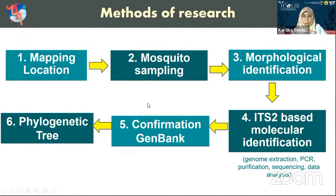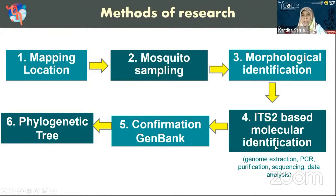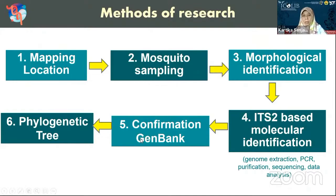There are several methods we used in our study. After mapping the location, we performed mosquito sampling by landing collection. Then we did morphological identification as the first measure to identify the vectors. This identification was further confirmed using ITS2-based molecular identification, which includes genome extraction, PCR, purification, sequencing, and data analysis. Once we obtained the ITS2 sequences, we performed bioinformatic analysis and confirmed identity by comparing sequences using the GenBank database. The ITS2 sequences were also used to construct a phylogenetic tree of our samples.